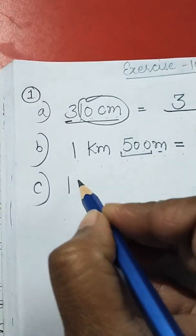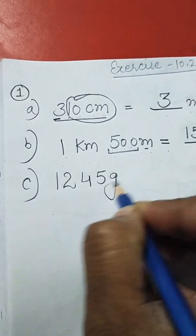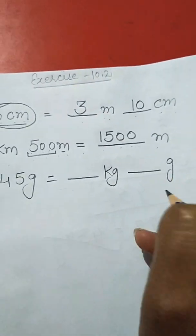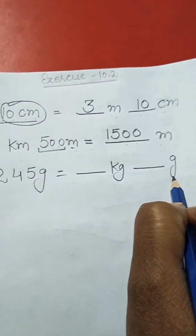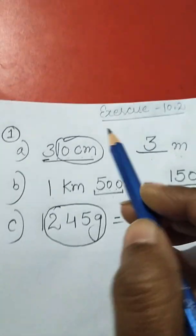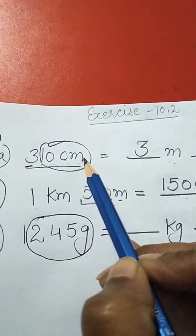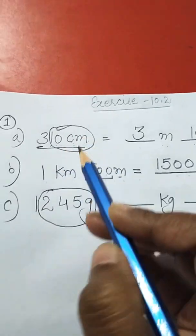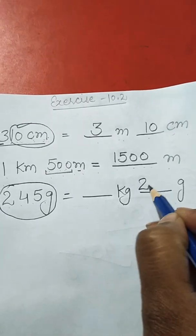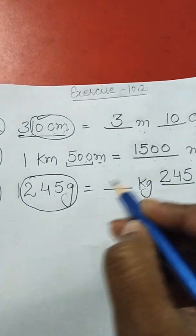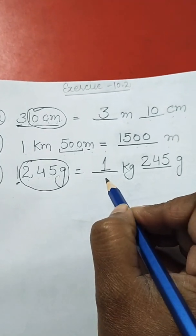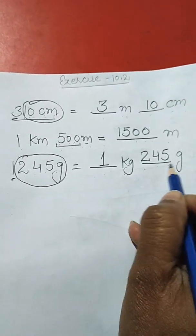Part C: 1245 grams is equal to dash kilogram dash gram. With gram we must take three digits, so we write 245 grams and the remaining digit 1 becomes kilogram. So the answer is 1 kilogram 245 grams.